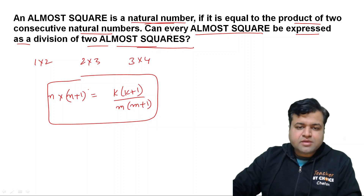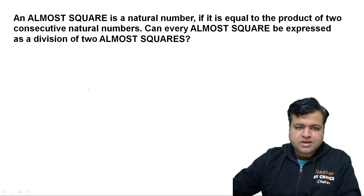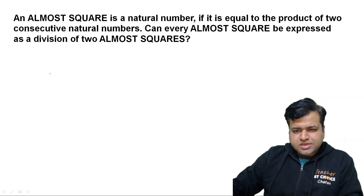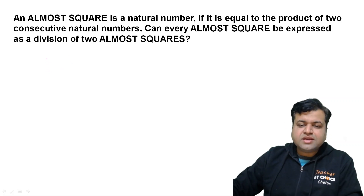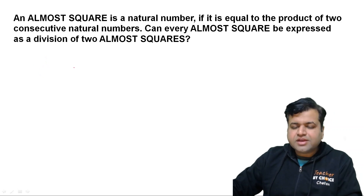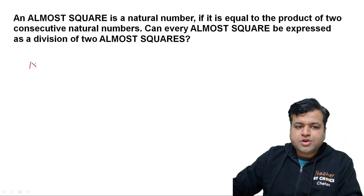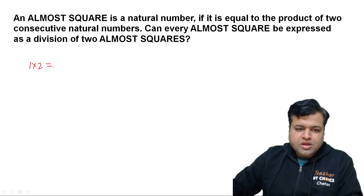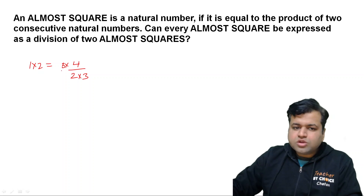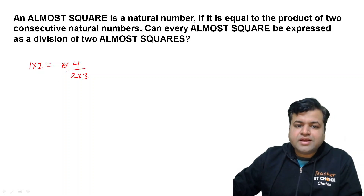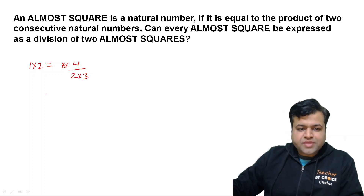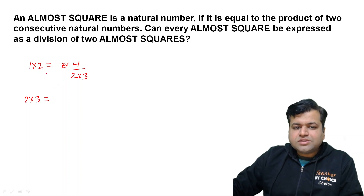On the next slide I will show the solution. Try your own approach first and check the question. If I try to think about how to write the question — this type of question is interesting. So 1×2 is 2, and 1×2 can be written as 4÷2, which is 3×4 upon 2×3 — wait, actually 1×2 can be expressed quite easily as a division of two almost squares.